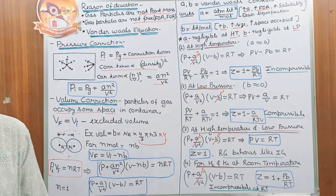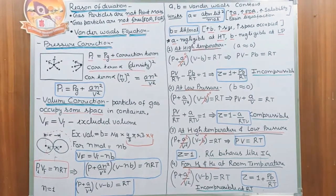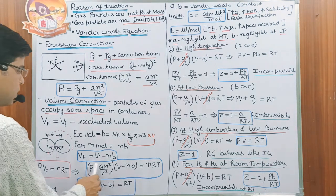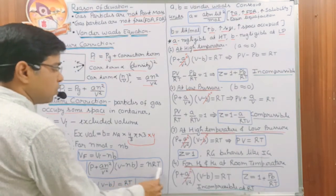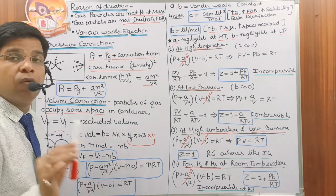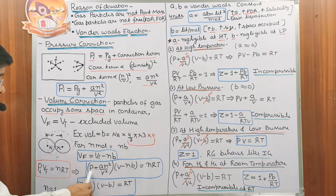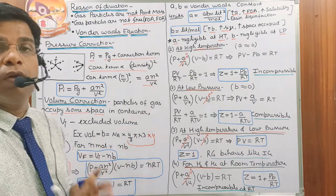Now substituting into the ideal gas equation with both corrections — P_ideal = P + an²/V² and free volume = V − nb — we get the Van der Waals gas equation: (P + an²/V²)(V − nb) = nRT. For one mole (n = 1), this simplifies to: (P + a/V²)(V − b) = RT. Here, a and b are the Van der Waals constants.